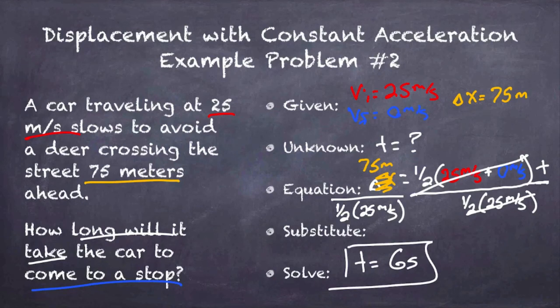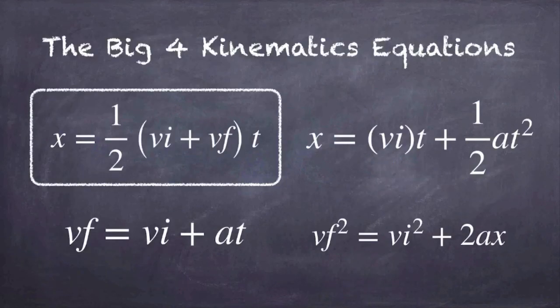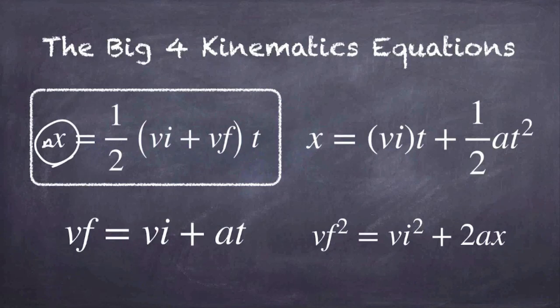So today we solved for delta x — displacement — in the first example, and then solved for time in the second. You should also be able to solve for initial or final velocity using the same approach. I hope that helps with the practice problems. Let me know if you have any questions.